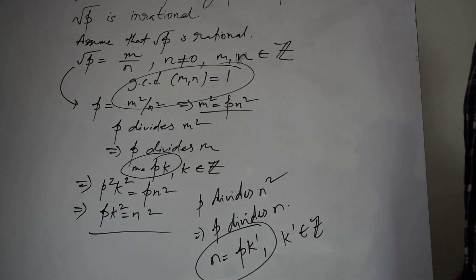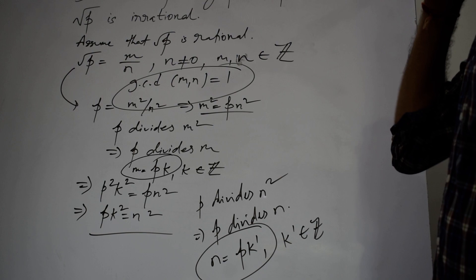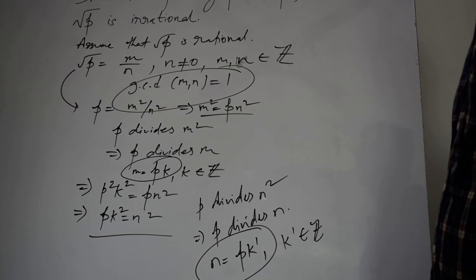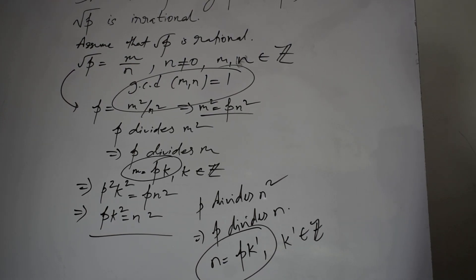Therefore, root p cannot be assumed to be rational, and therefore root p is an irrational number. Thank you.